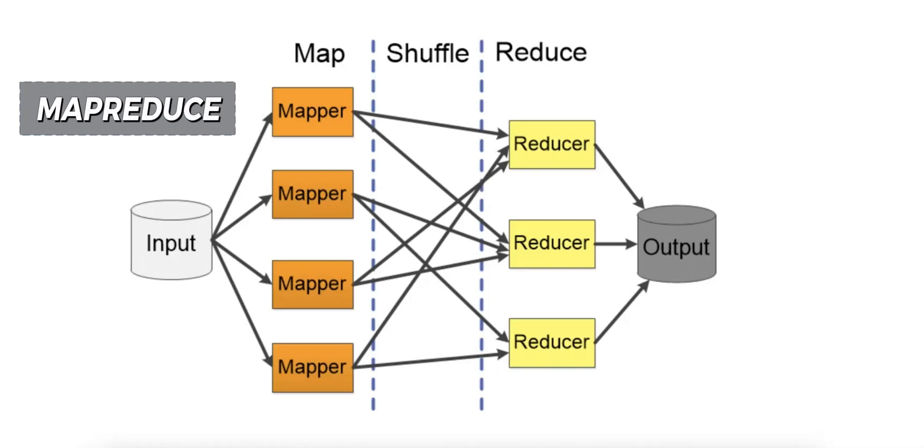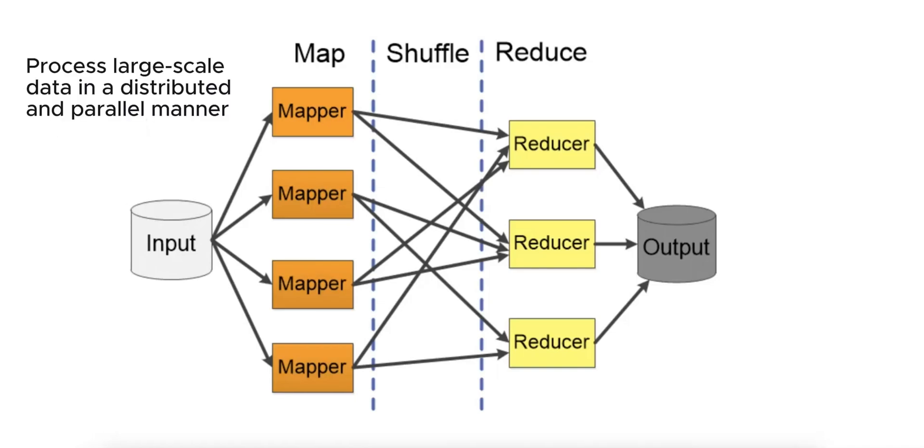MapReduce is a programming model and framework for processing large-scale data in a distributed and parallel manner, typically used in big data systems like Hadoop. It allows for processing vast amounts of data by splitting tasks across multiple machines, handling large data sets that would not fit on a single machine.